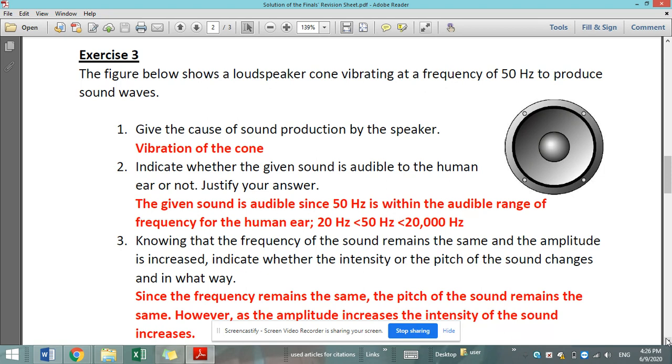Indicate whether the given sound is audible to the human ear or not, justify your answer. So you have to memorize the range of audible frequencies by the human ear, which is 20 hertz till 20,000 hertz. So any value within these two limits are audible by the human ear, also 20 hertz and 20,000 hertz, so including them. The given sound is audible since 50 hertz is within the audible range of frequency for the human ear. So it's greater than 20 and less than 20,000 hertz. It's in between, so yes, it is audible.